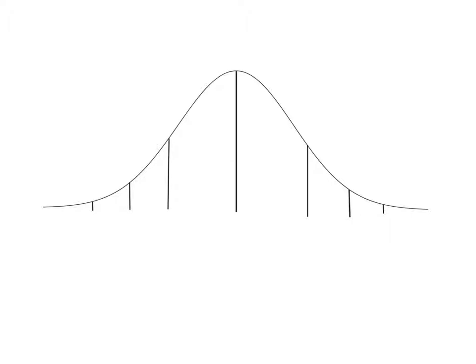So I'm going to write that the SAT is approximately normally distributed. This symbol means 'approximately' — it's not going to meet these standards exactly, but it's roughly that. The N means it's normally distributed: it meets the 68-95-almost all rule, it's unimodal and symmetric. It's a little shorter to write it that way than to write out 'approximately normally distributed.'